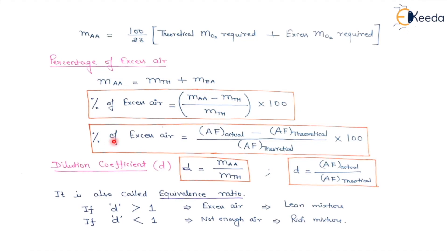In terms of air fuel ratio, the percentage of excess air is equal to (actual air fuel ratio minus theoretical air fuel ratio) divided by theoretical air fuel ratio, multiplied by 100.